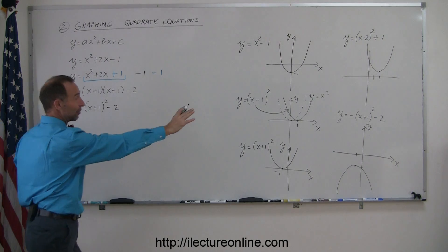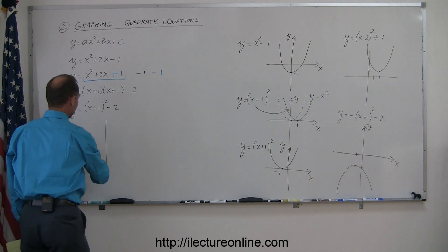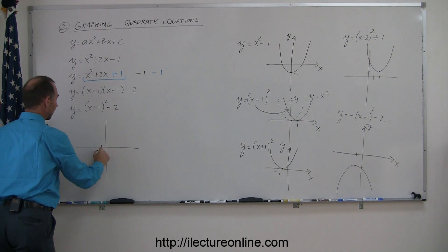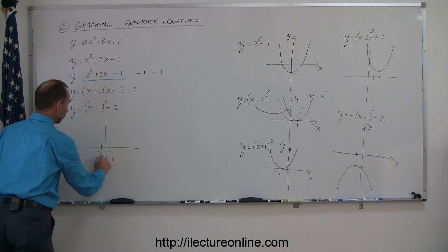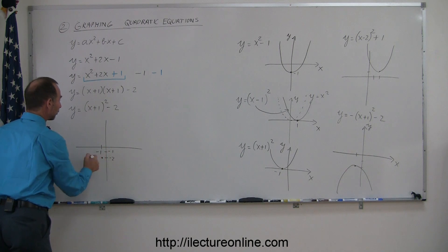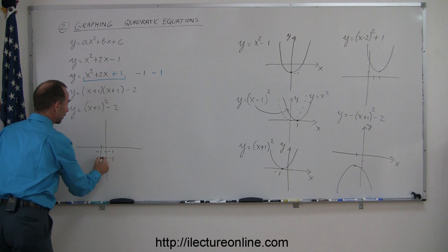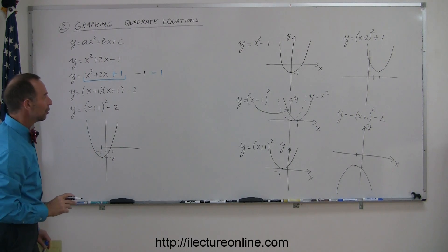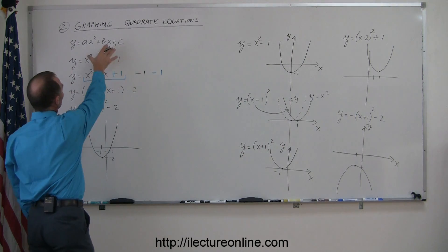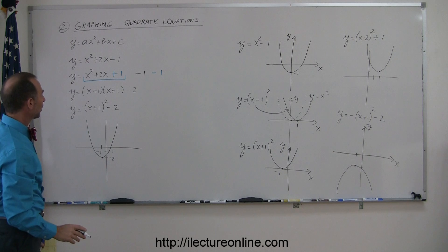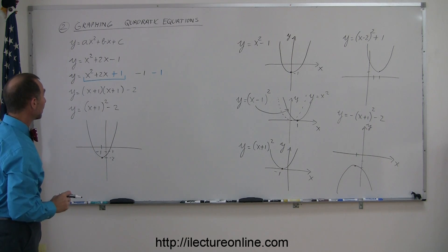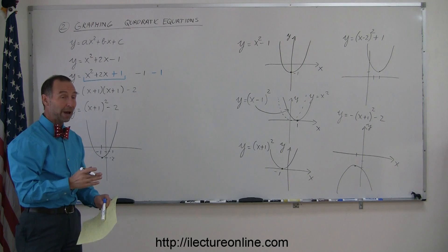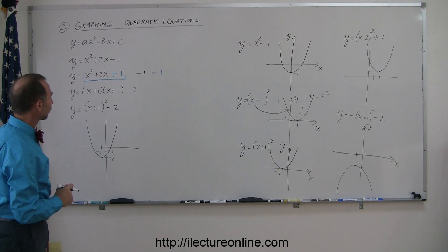Now this looks like something we've seen before. The parabola will be shifted to the left by 1 and down by 2, so the vertex is at x equals minus 1, y equals minus 2. Since this is a positive x squared term, the parabola opens upward. Even though it didn't start out looking like those earlier examples, you can quickly transform it using the completion of the square method, which gives you a good way to quickly graph a quadratic equation without a lot of extra work.